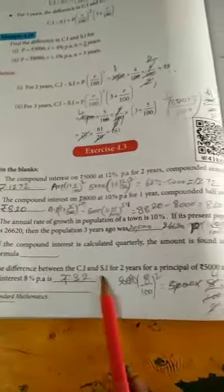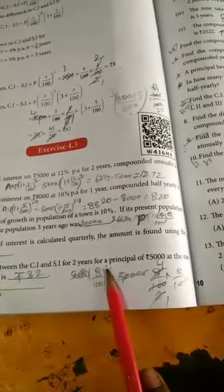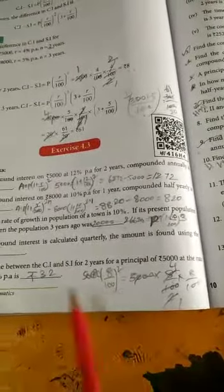Here, the difference between the CI and SI for 2 years. So apply the 2-year formula, you can find the amount. And they say true or false.